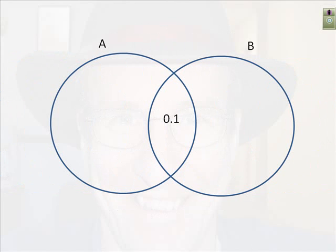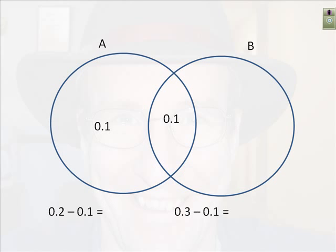Now we're ready to draw our Euler diagram. We start off by putting in the intersection, which is 0.1. We've got to calculate what goes in A that's outside the intersection. We know the total probability of A is 0.2, and part of it is already accounted for by the intersection. So 0.2 minus 0.1 gives us 0.1 — that's what goes in A outside of the intersection. Now for B: the total probability is 0.3, with 0.1 accounted for in the intersection, so 0.2 goes in B.